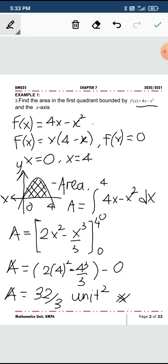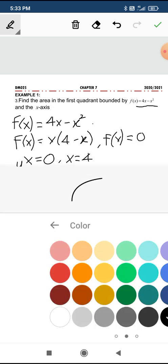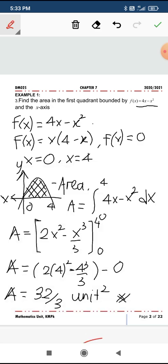So the area in the first quadrant bounded by the function f(x) and the x-axis. As you go through this example, as you can see, these two values, the upper and the lower limit, is technically the x-intercept. And then you have to factorize and you have to find it. And then sketch is very important.